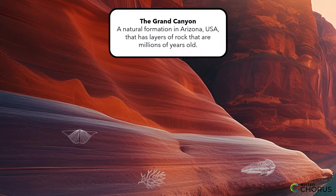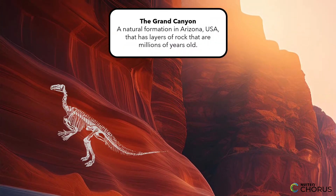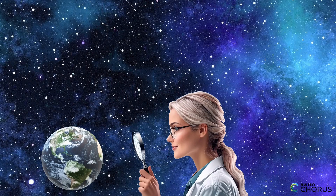As they move up the layers, they find fossils of terrestrial, or land animals like dinosaurs, showing that the area was once dry land. By putting all of this information together, scientists can construct a scientific explanation of Earth's history.